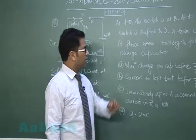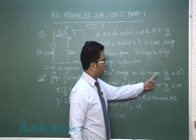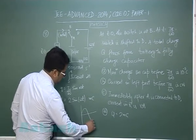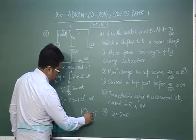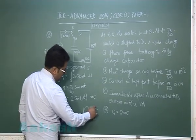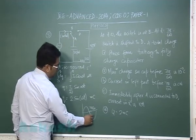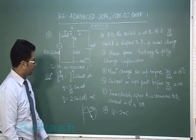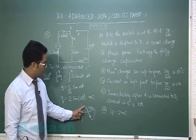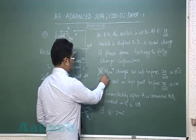The maximum charge on the capacitor before 7pi by 6omega: on the time axis, pi by omega marks the half period, so 7pi by 6omega falls in the second half-cycle. Before that point, the charge would have reached its peak value of 2 millicoulombs. However, option A states the maximum charge is 1 millicoulomb — this is incorrect.